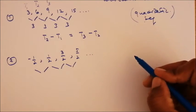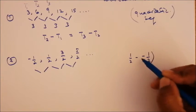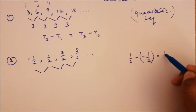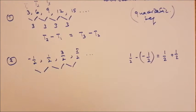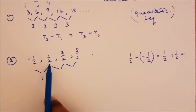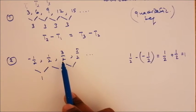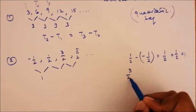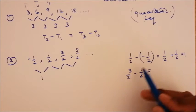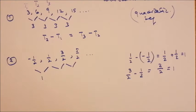So: 1/2 minus (−1/2) equals 1/2 plus 1/2 which equals 1. Then 3/2 minus 1/2 equals (3 minus 1)/2 equals 2/2 which equals 1.